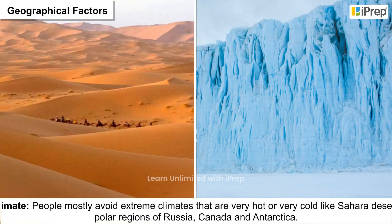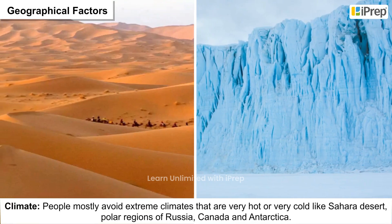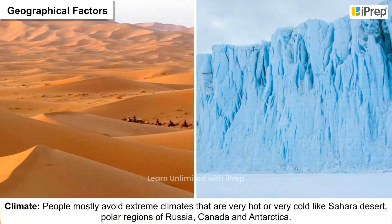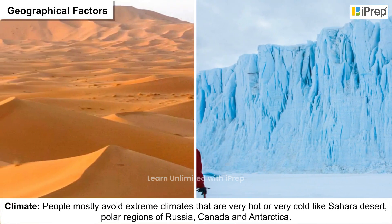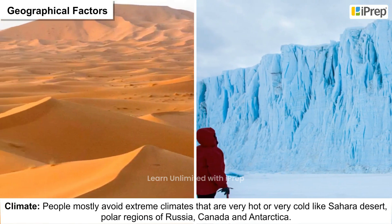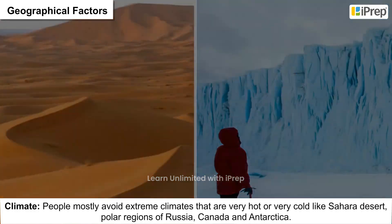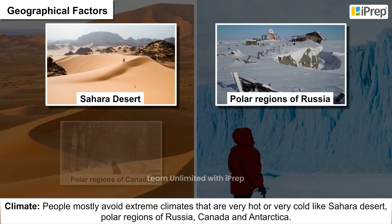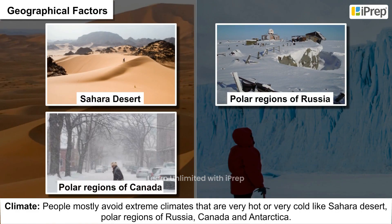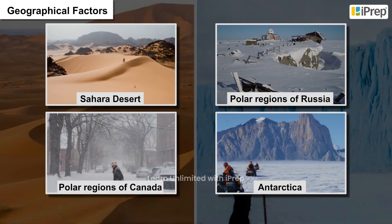Climate: People mostly avoid extreme climates that are very hot or very cold, like the Sahara Desert, polar regions of Russia, Canada and Antarctica.